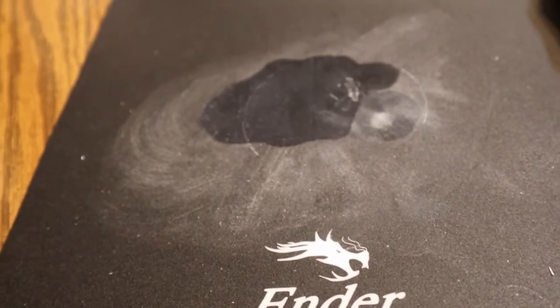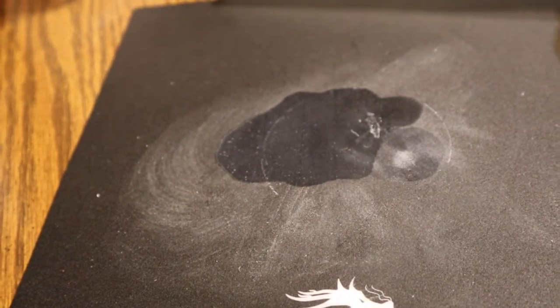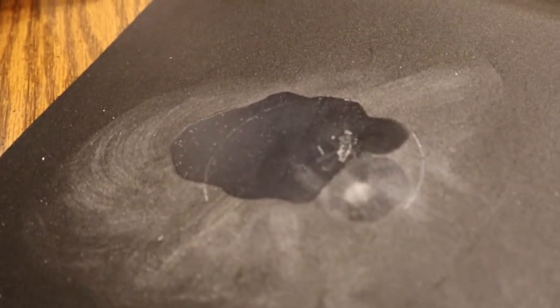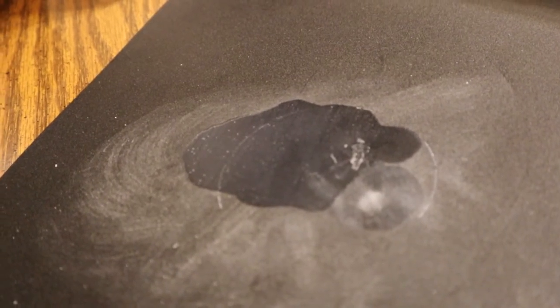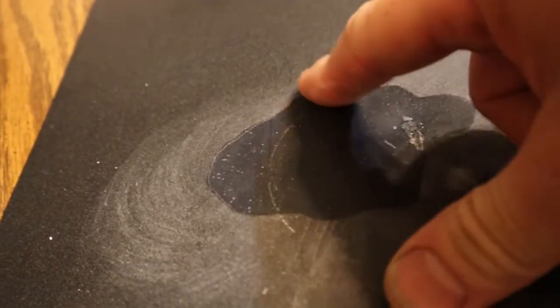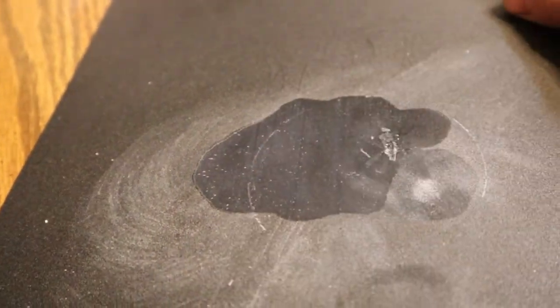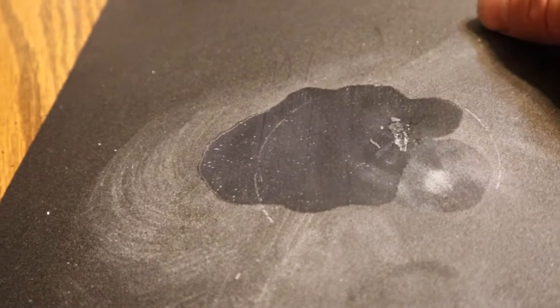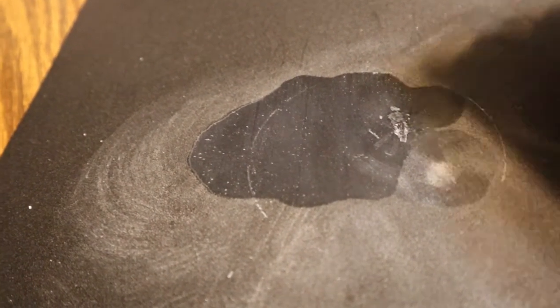Not that it's a big deal if I have to order a new one. This has been Master of None: PLA removal from a flexible magnetic build plate. I'm not going to call this one a success. I mean, we got it off there but we did damage the plate and we might have problems using this in the future. Definitely the rubbing alcohol got 90% of it off. Like, subscribe, and we'll catch you next time.